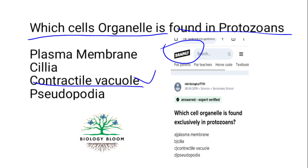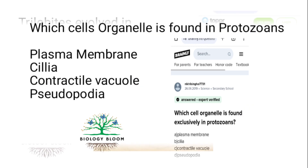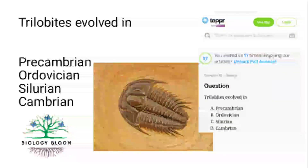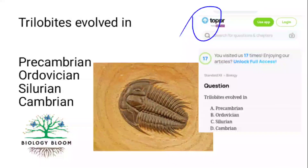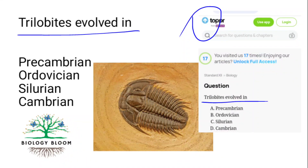It is the contractile vacuole. The contractile vacuole is found in protozoans. Next, taken from Topper as it is: trilobites evolved in which period?